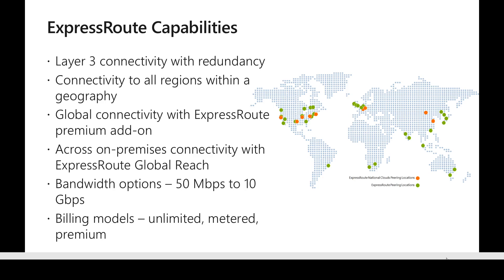Microsoft peering helps connect from an on-premises data center to public Azure services. For example, if a customer uses Azure services like Media Services or App Services which have a public endpoint, they can enable Microsoft peering to connect to those publicly exposed services through a private dedicated connection. Microsoft peering also enables connectivity to other Microsoft services like CRM, Dynamics, and Office 365.